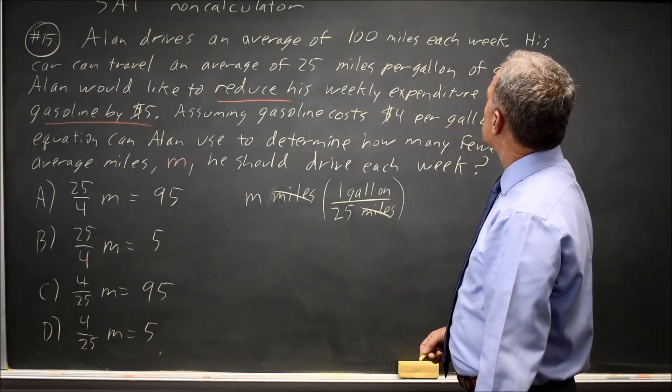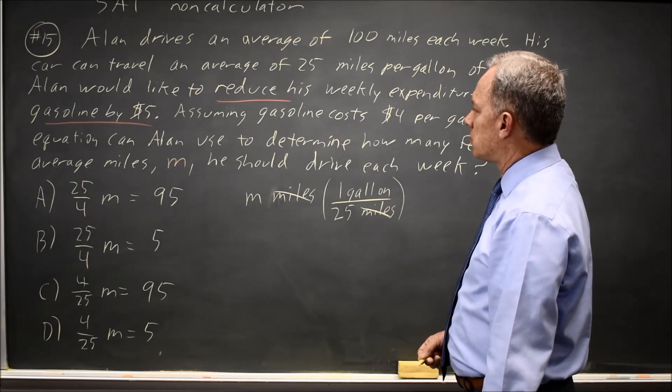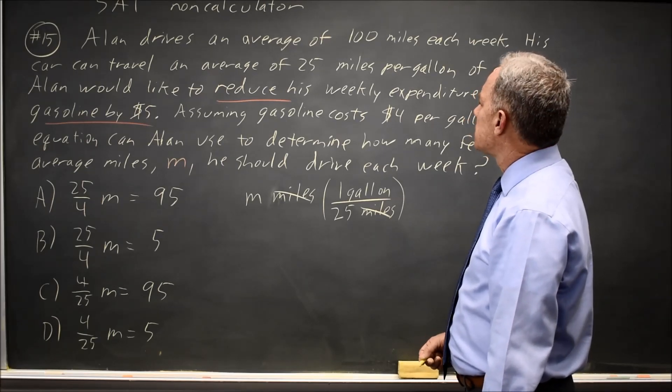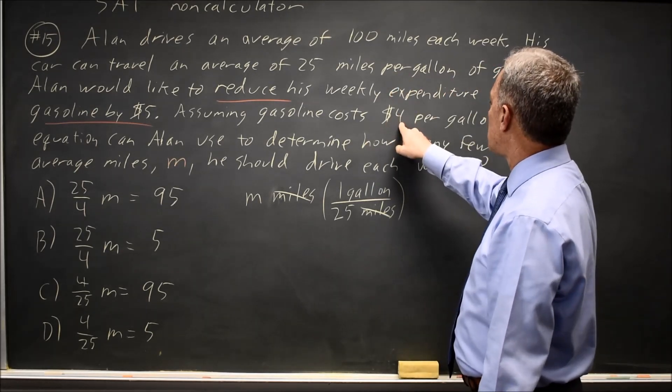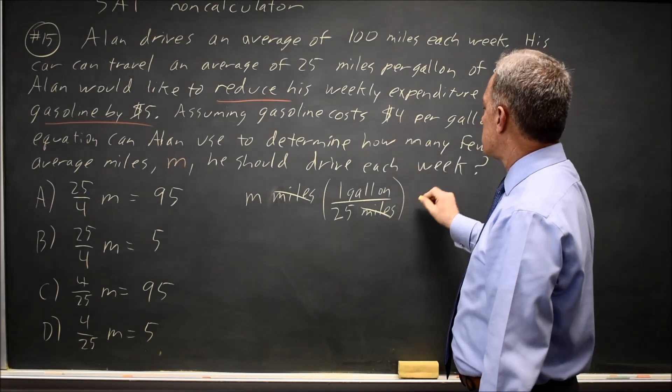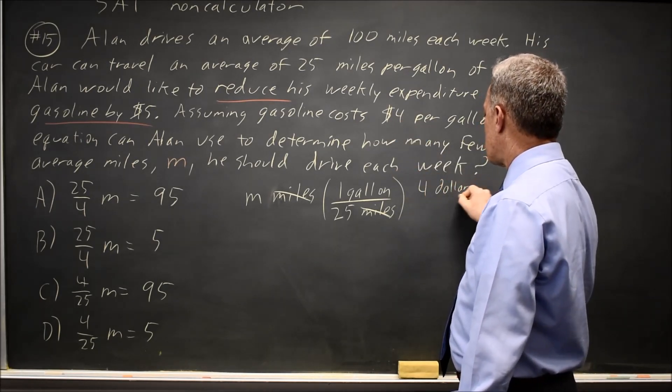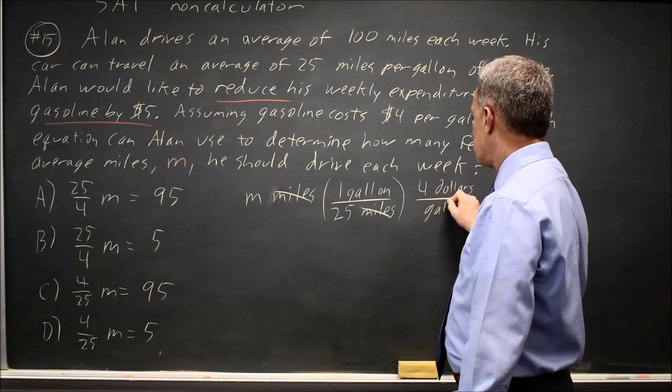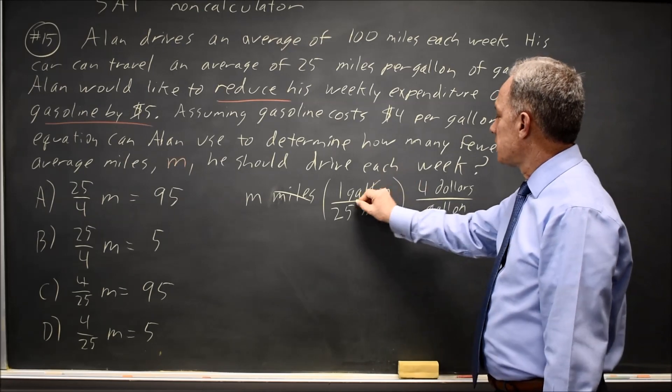But I want to know how many dollars. Gasoline is somewhere up here. Gasoline is four dollars per gallon, so that's four dollars per gallon. Per gallon means gallons goes in the denominator. Gallons will cancel.